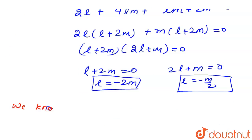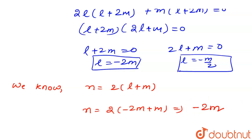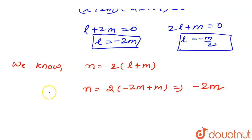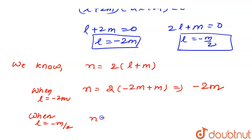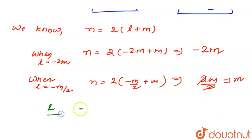We know n = 2(l + m). For the first case when l = −2m: n = 2(−2m + m) = 2(−m) = −2m. For the second case when l = −m/2: n = 2(−m/2 + m) = 2(m/2) = m.